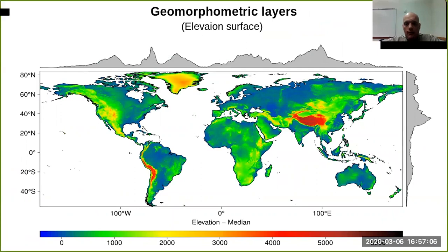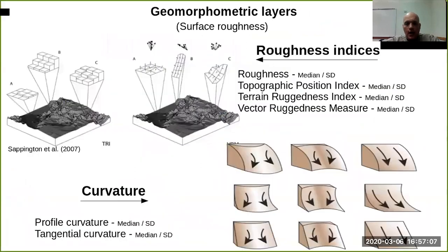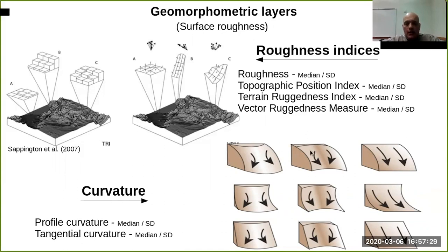The roughness indices are nothing else but how rough the surface is — how much up-and-down variation you have in the topography. The curvatures are the ones I mentioned before, and here you can see a 3D representation showing concavity and convexity.